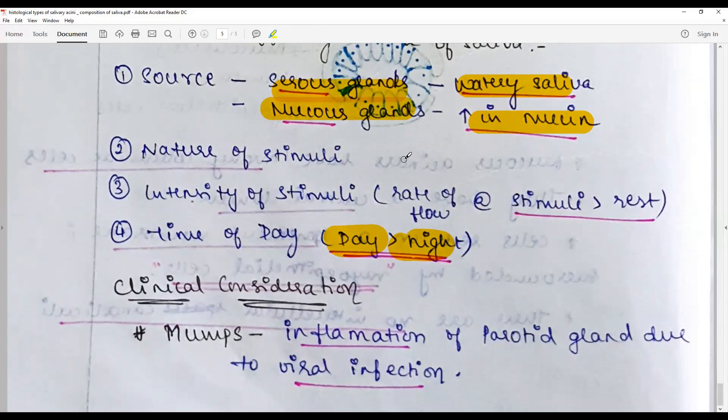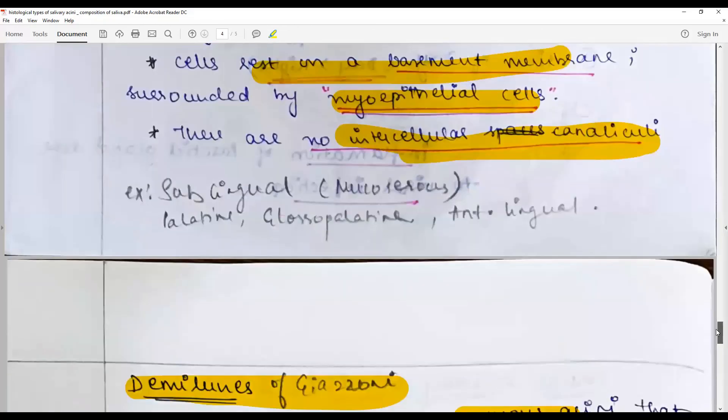Thus we come to the end of the discussion on the histological types of salivary glands and acini.